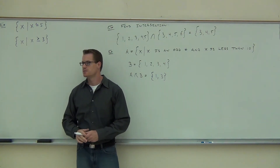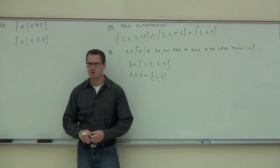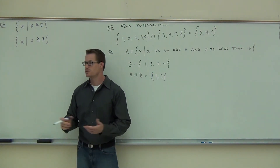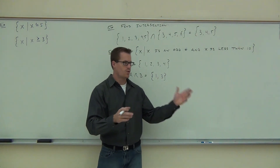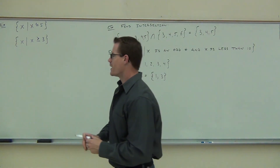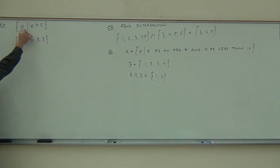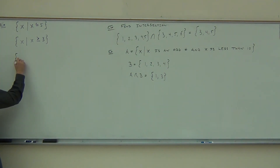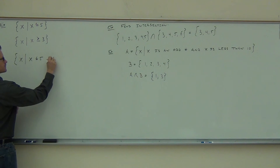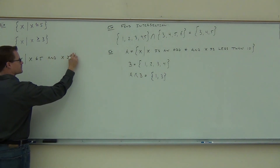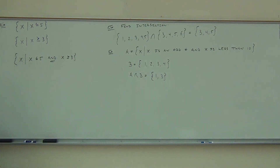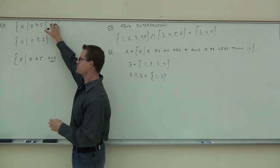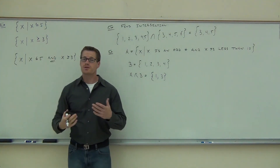Now look at the second set: x such that x is greater than or equal to 3. 3 works because of the 'equal to.' 4 works, 10 works, 10.2 works — anything greater than or equal to 3. Not 2, not 1, not negatives. My question is: if you know this set and you know this set, can we talk about a combined set where we have that word 'and' — where not only do you have the first condition, but also at the same time the second condition? Are there numbers that satisfy both?